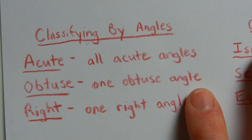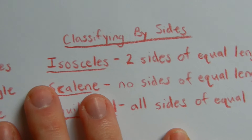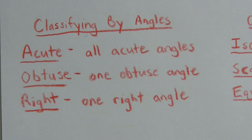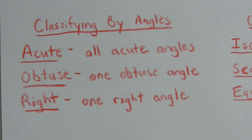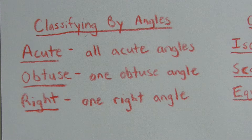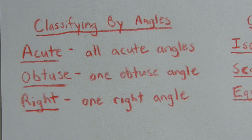Triangles are classified by two things: angles and sides. When classifying a triangle by its angles, if a triangle is an acute triangle, that means all three angles within the triangle are acute — each individual angle will be less than 90 degrees. For an obtuse triangle, one angle must be obtuse, so one angle will be greater than 90 degrees. For a right triangle, one angle will be exactly 90 degrees.